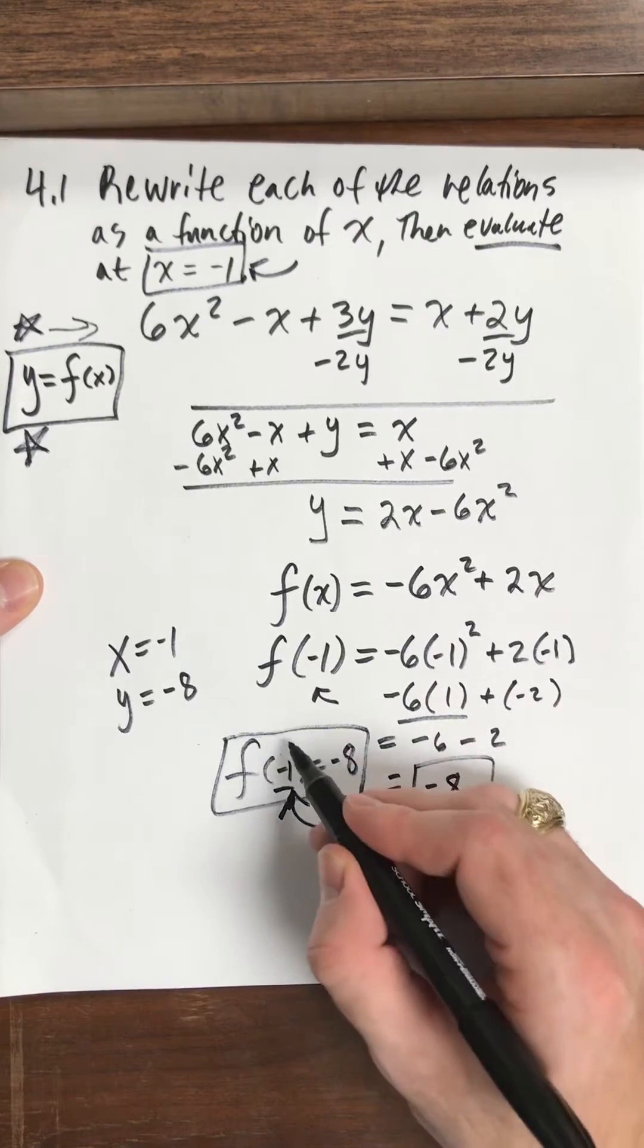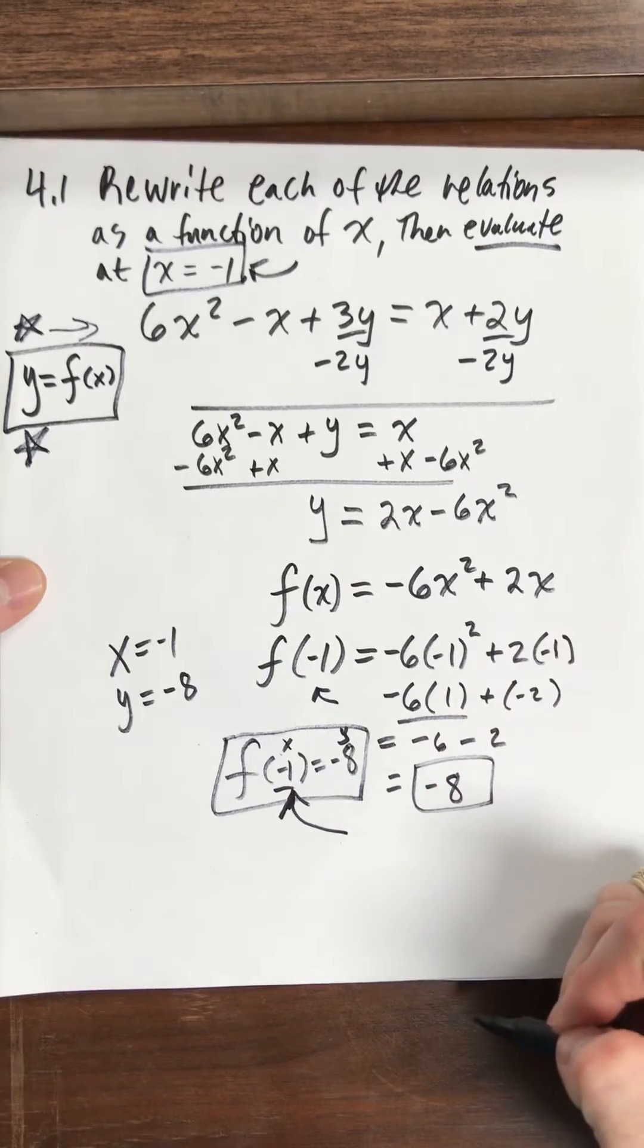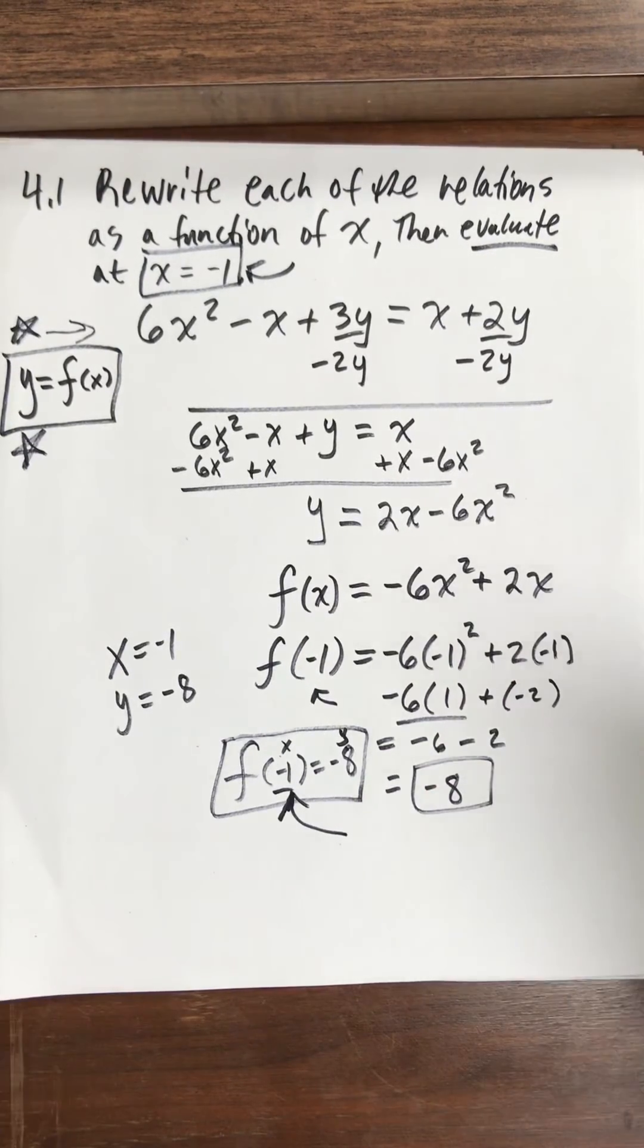I now know that my x value is negative 1. And when that's true, y is equal to negative 8, the f of x. Okay, that's it.